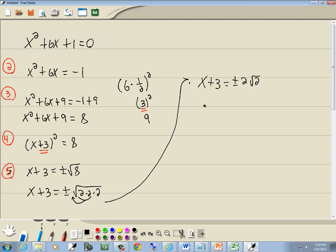And then I'm solving for x, so I'll take a negative 3 over. And we get x is equal to negative 3 plus or minus 2 square root of 2. And that's our answer.